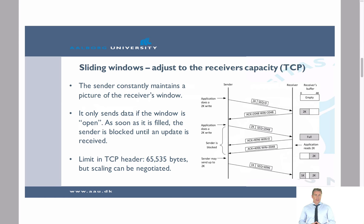TCP is an old protocol, and when developed, a limit of 65,535 bytes was sufficient. But with fast connections today, this window size is easily saturated and becomes a limiting factor. Therefore, we can negotiate what is called scaling — agreed upon at connection setup — to scale the window size up by a factor of, for example, 8 or 16.